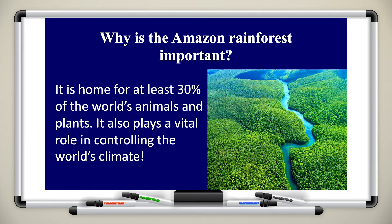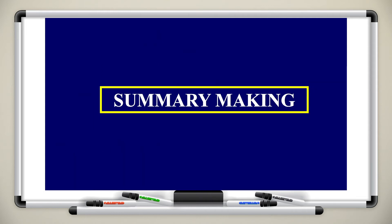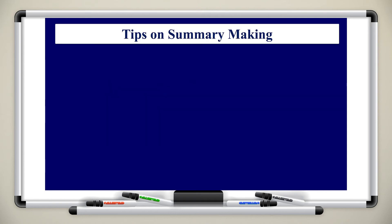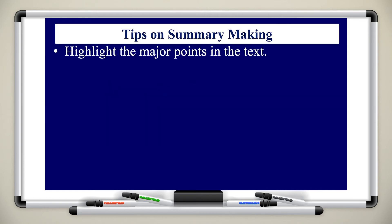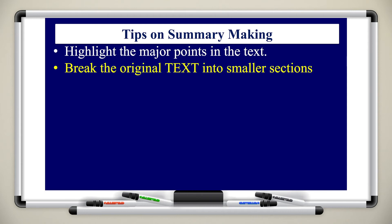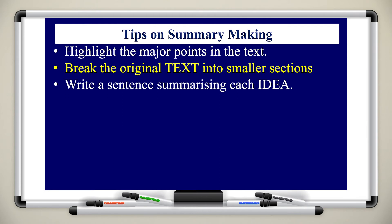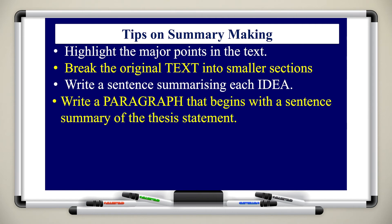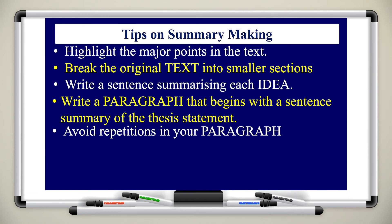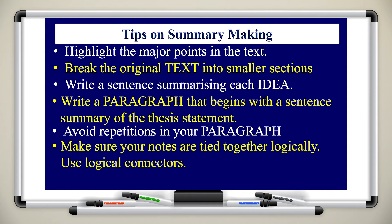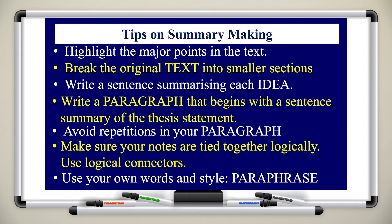Now let's move on to summary making. When making a summary, highlight the major points in the text, break the text into smaller sections, take each sentence and summarize the idea from it, and remove unnecessary details. Then put them in a paragraph format — not bullet points. Avoid repeating yourself, make sure you have four different ideas, and tie these ideas using connectors.